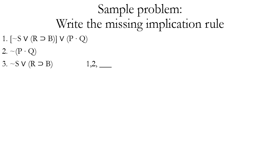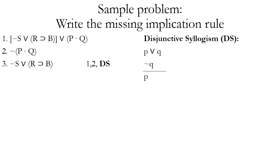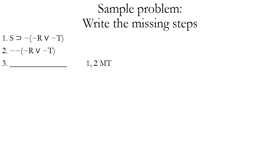Another example: premise one is a wedge, and premise two is the negation of the second disjunct of that wedge. The conclusion is the first disjunct. The answer is DS or disjunctive syllogism — in this case, we've negated the second disjunct instead of the first, but we're using the same rule.